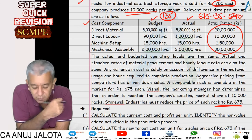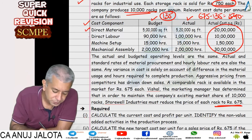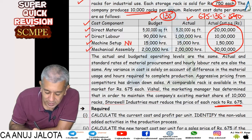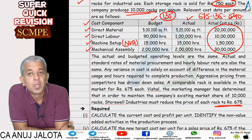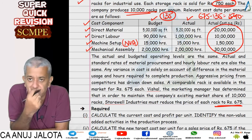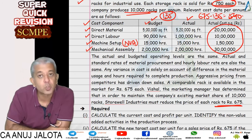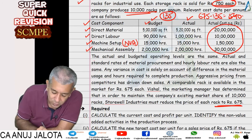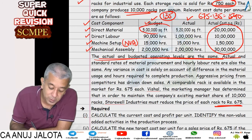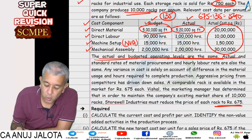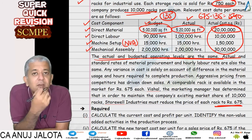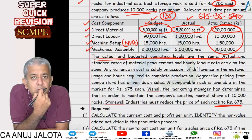There were four costs: material, labor, machine setup, and mechanical assembly. Machine setup is a non-value-added activity — this does not mean we need not do it; it means the customer does not value it. The budget and actual operating levels are both for 10,000 units. We should have consumed a budgeted amount of material but consumed more, so actual cost was higher due to inefficiency. The first idea: cut down material cost.